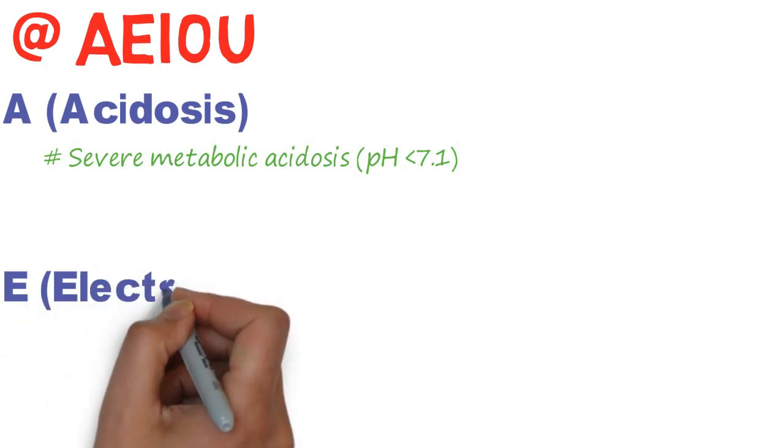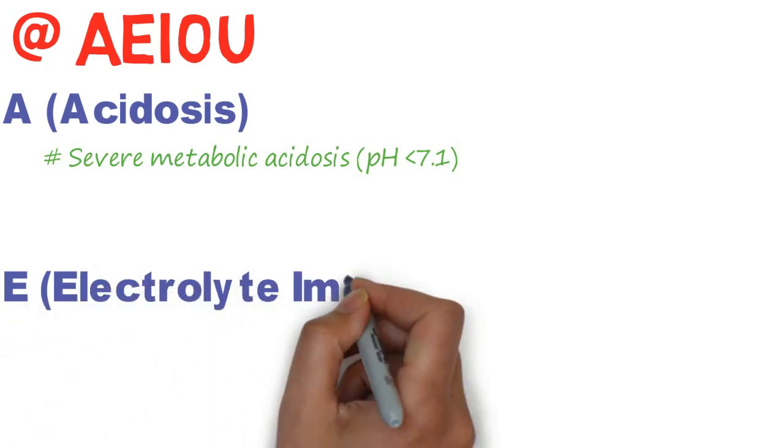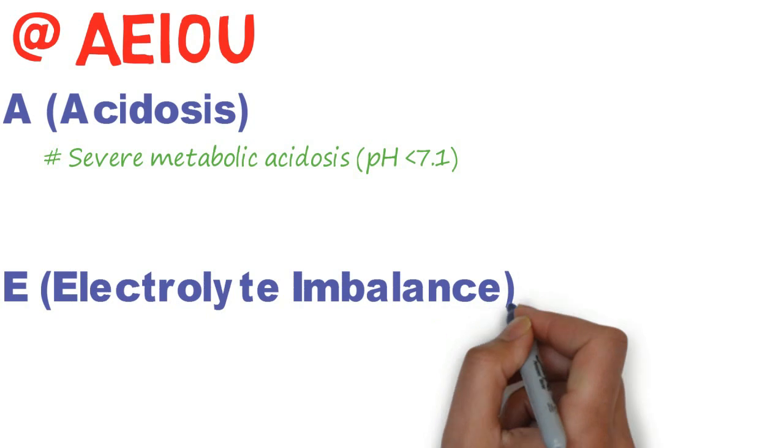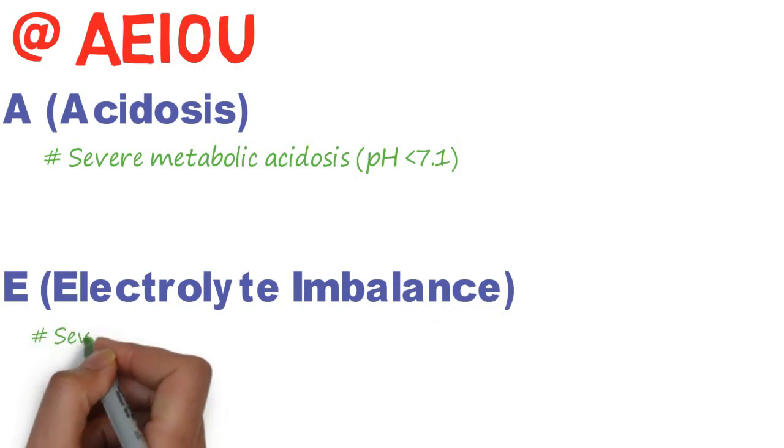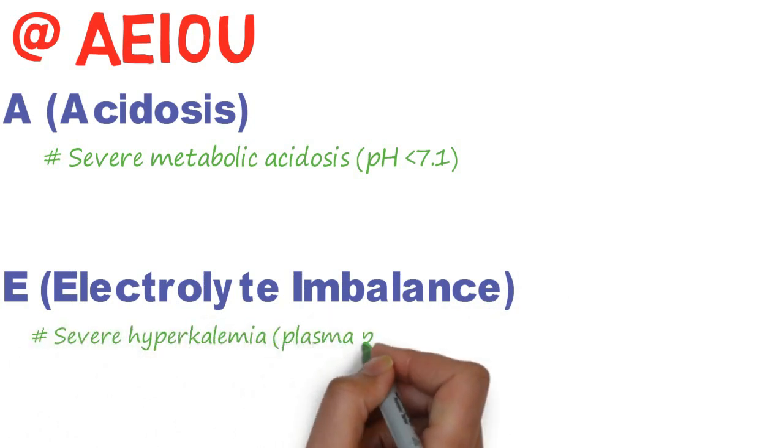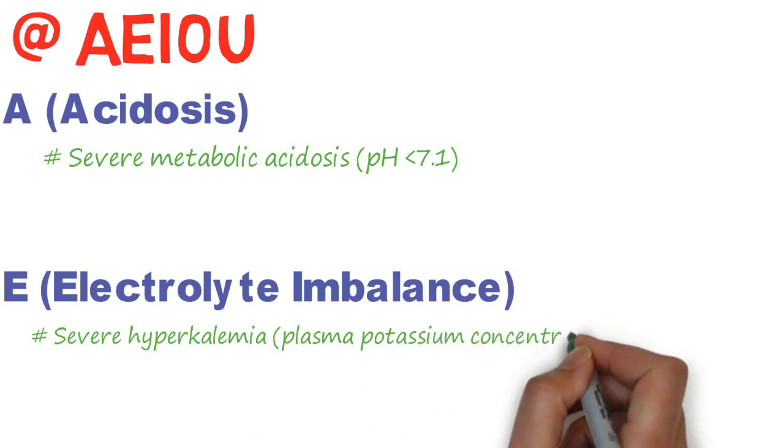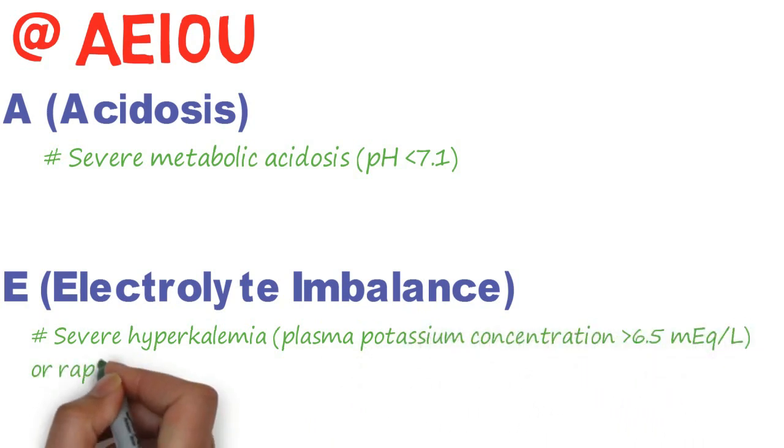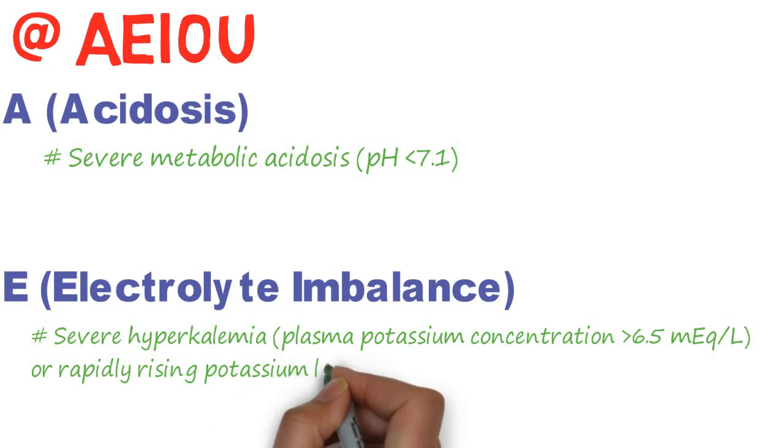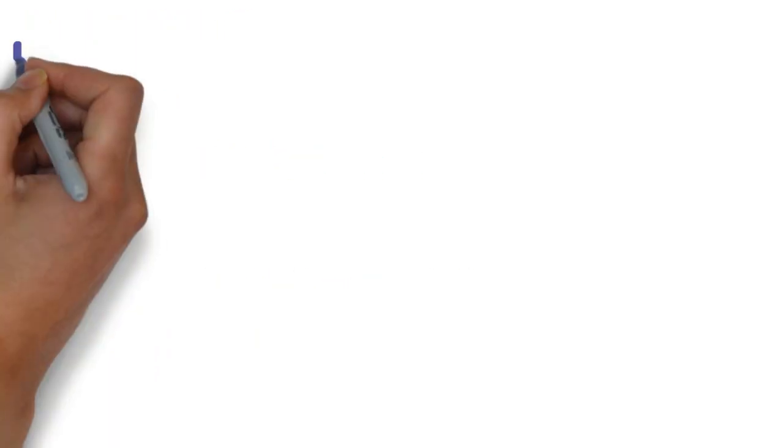Second indication is E for Electrolyte imbalance: severe hyperkalemia with plasma potassium concentration more than 6.5 mEq per liter, or rapidly rising potassium levels.